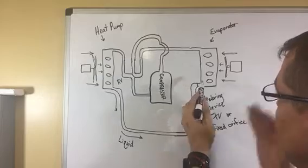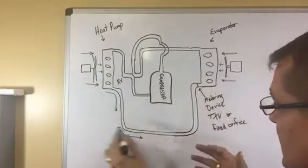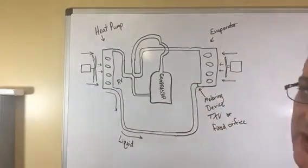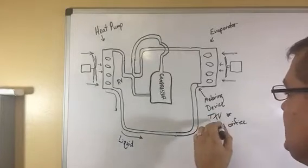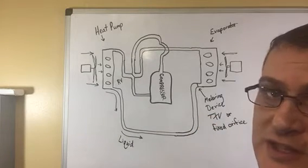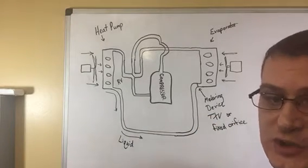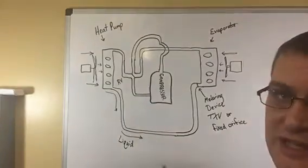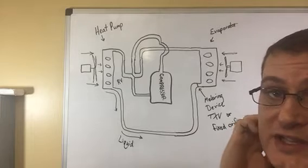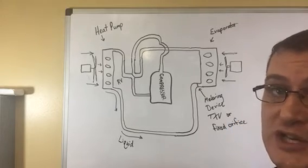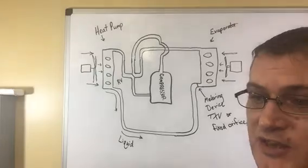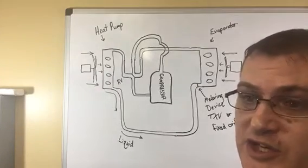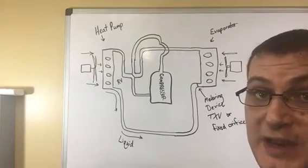It comes through to the indoor coil as a liquid where it hits a metering device. Now that metering device can be a TXV or a fixed orifice. TXV is just short for a thermostatic expansion valve. Fixed orifice is just exactly what it is. It's just a little orifice that maintains the same pressure no matter what. An expansion valve adjusts the pressure according to the demand.